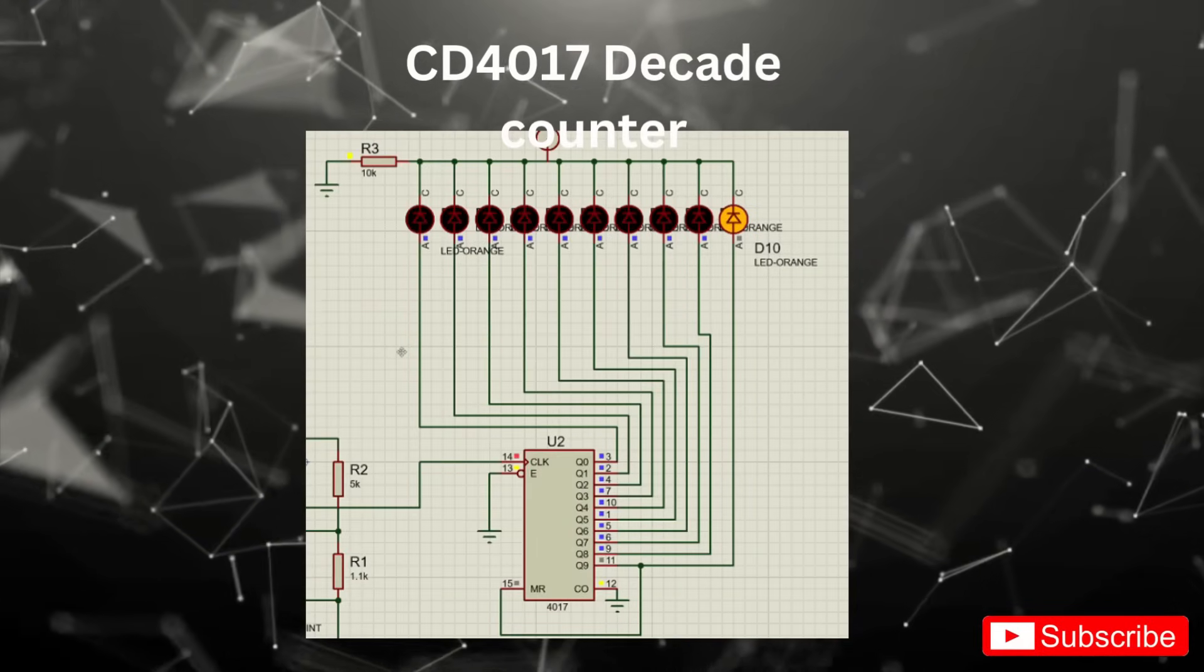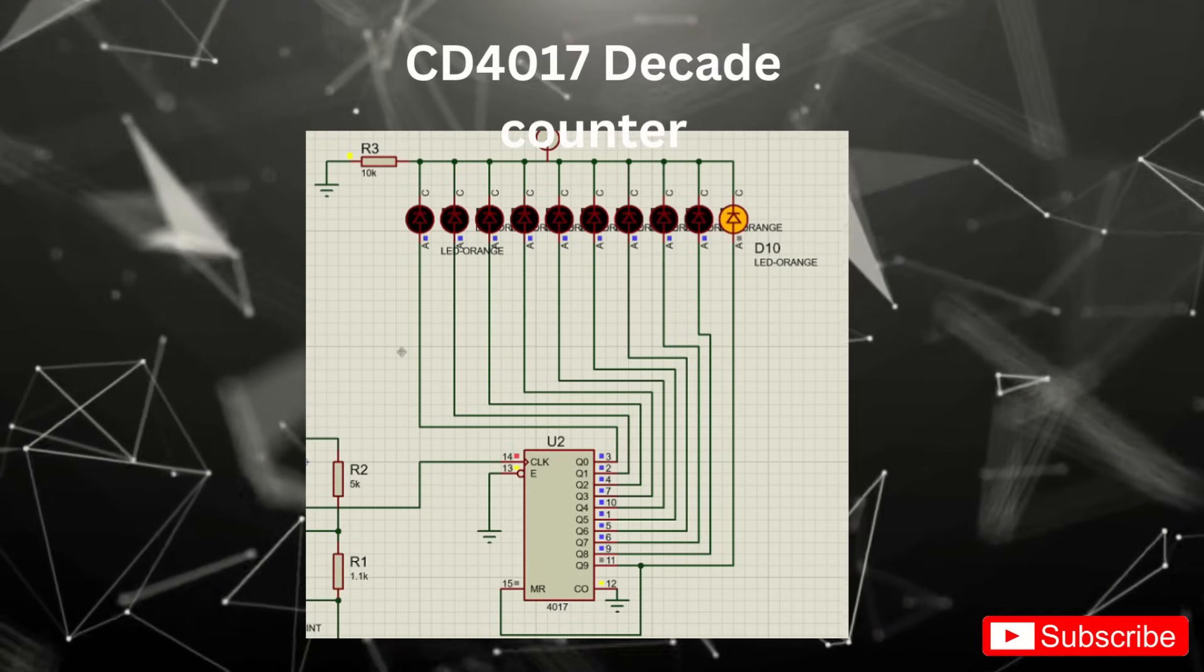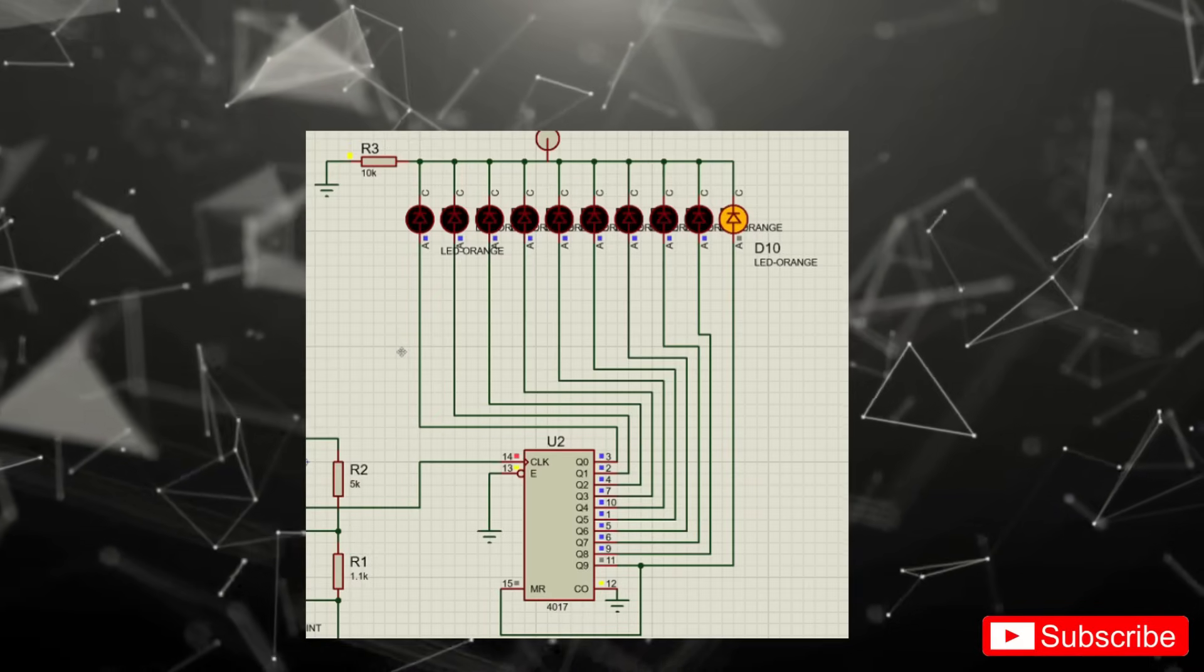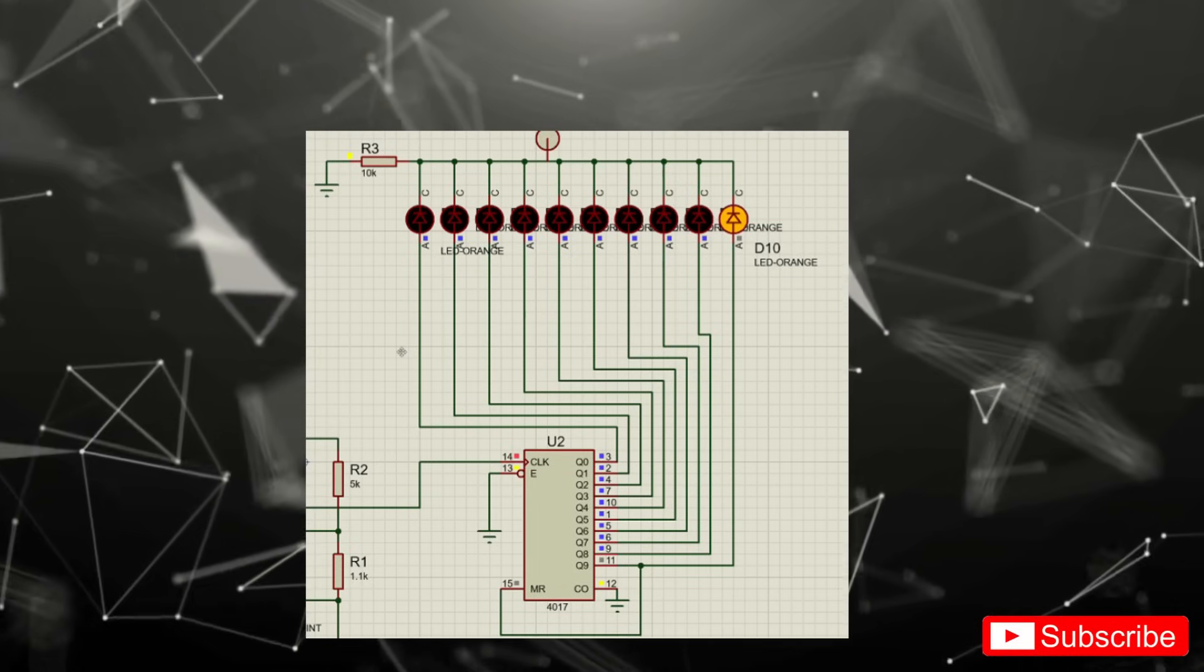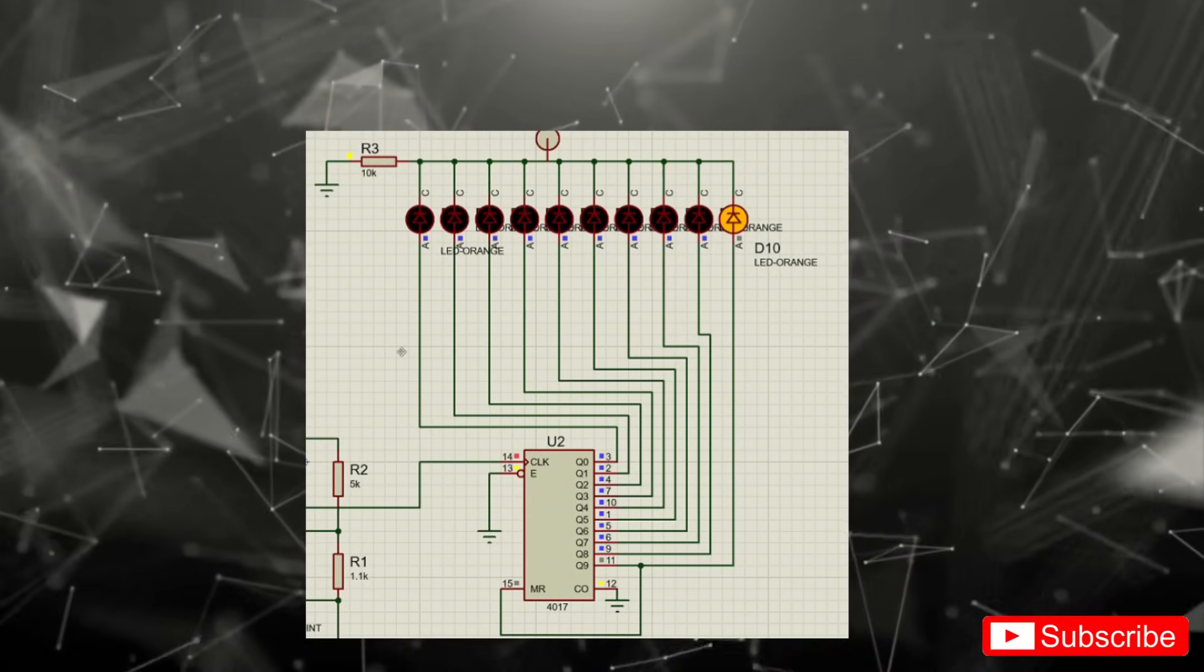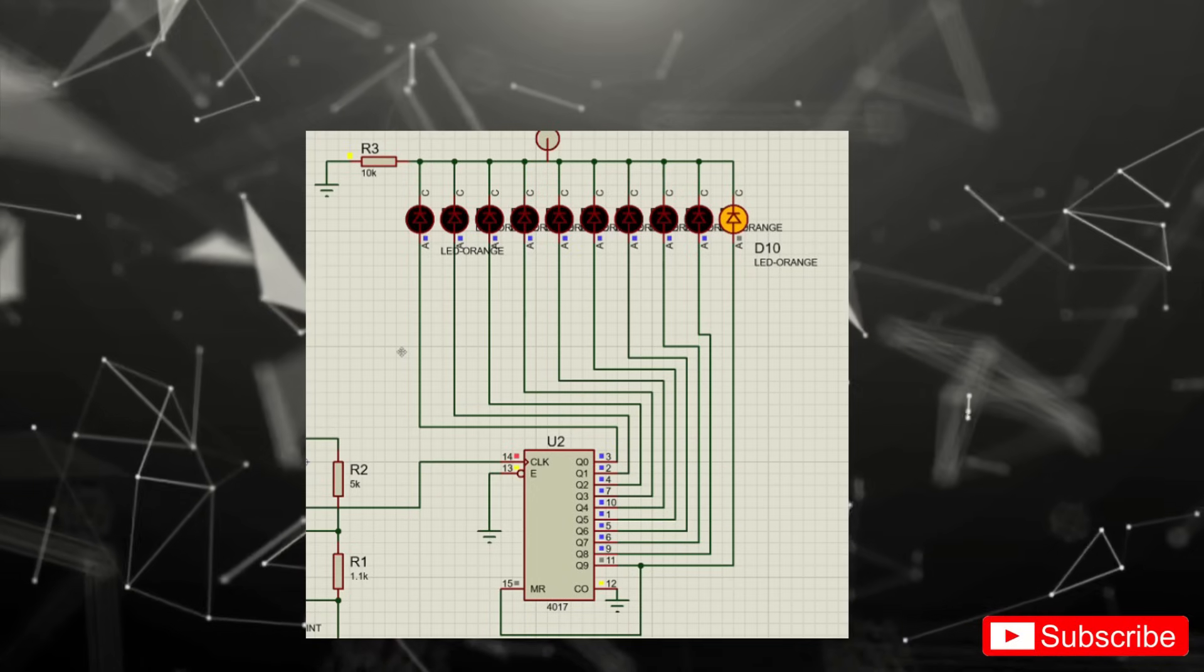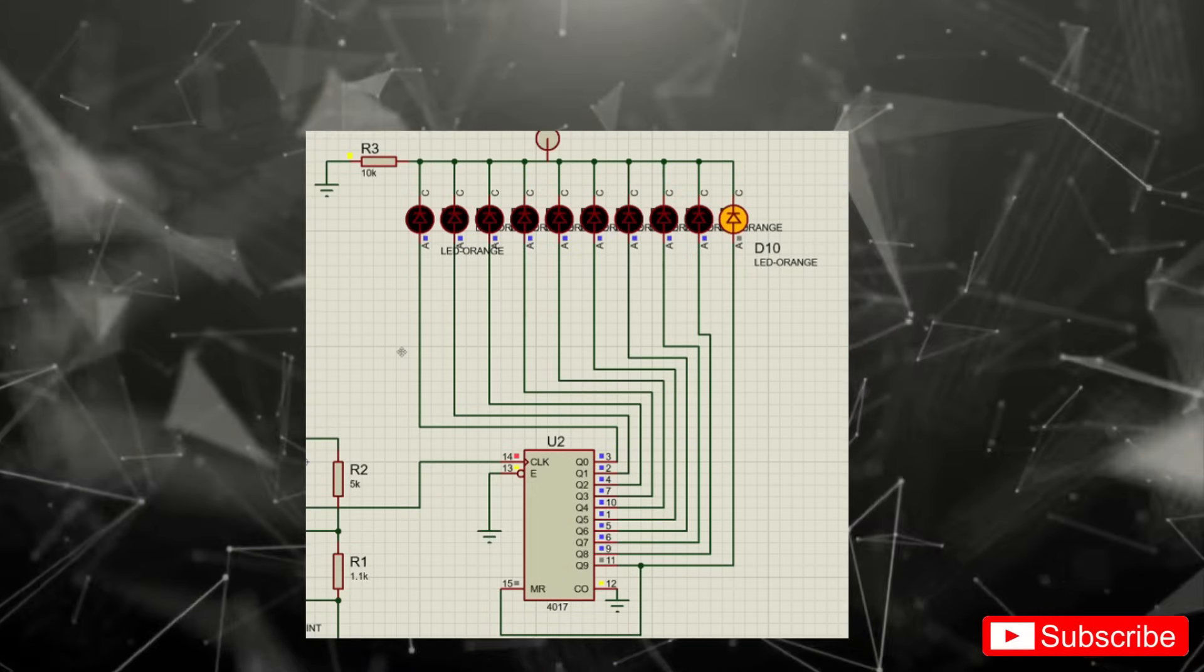On screen, you'll see my schematic with the CD4017 chip U2. I've tied the reset pin 15 and enable pin 13 to ground so the counter can run freely. The clock input pin 14 gets pulses from our 555 timer or any other clock source. Each of the 10 outputs, Q0 to Q9, feeds an orange LED through its own series resistor, and the LED cathodes all return to zero V. With every clock pulse, the 4017 steps one output high, giving that classic running light effect.